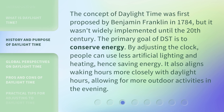The concept of Daylight Time was first proposed by Benjamin Franklin in 1784, but it wasn't widely implemented until the 20th century. The primary goal of DST is to conserve energy. By adjusting the clock, people can use less artificial lighting and heating, hence saving energy. It also aligns waking hours more closely with daylight hours, allowing for more outdoor activities in the evening.